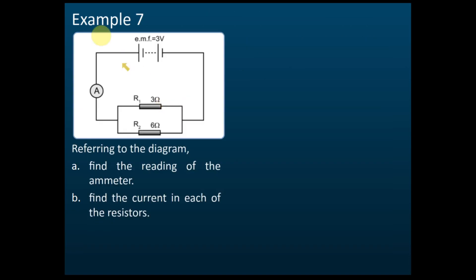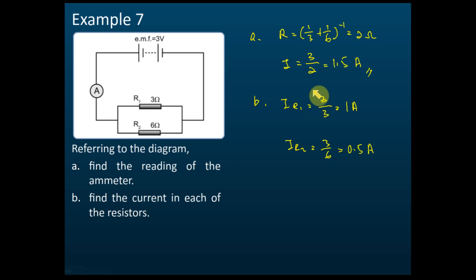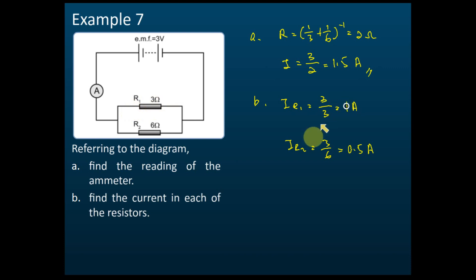So for this example, the answers are: (a) is 1.5 amperes, and for (b), the current passing through R1 is 1 ampere, and the current passing through R2 is 0.5 amperes.